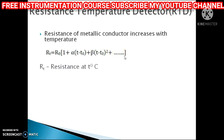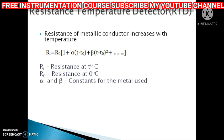Where RT is the resistance at T degrees Celsius, R0 is the resistance at 0 degrees Celsius, and alpha and beta are constants for the metal used. The higher-order constants of this equation can be neglected because their values are smaller than alpha, and hence the equation becomes RT equals R0 times (1 plus alpha times delta T).